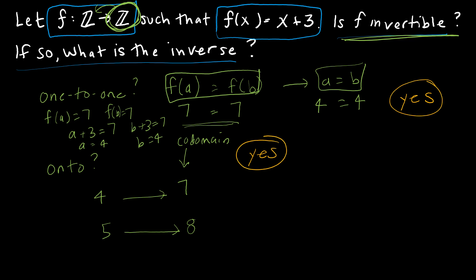So because this is both 1 to 1 and onto, it is a bijection and therefore invertible. So those are things that I would write down on an assignment or test. I'm just saying them out loud to you. Now the next question says, if so, what's the inverse?